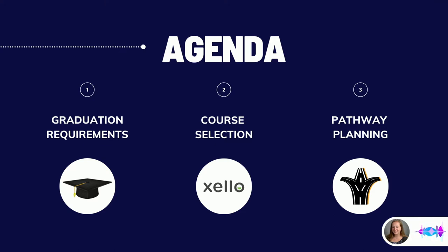Tonight's presentation will cover three main areas. We will start with an overview of what is required to graduate with an Ontario high school diploma, then move on to course selection outlining compulsory courses and elective options for each grade, and provide a breakdown of Zello, which is our course selection software. We'll finish by discussing the various post-secondary pathways and how to pick courses according to one's post-secondary goals.